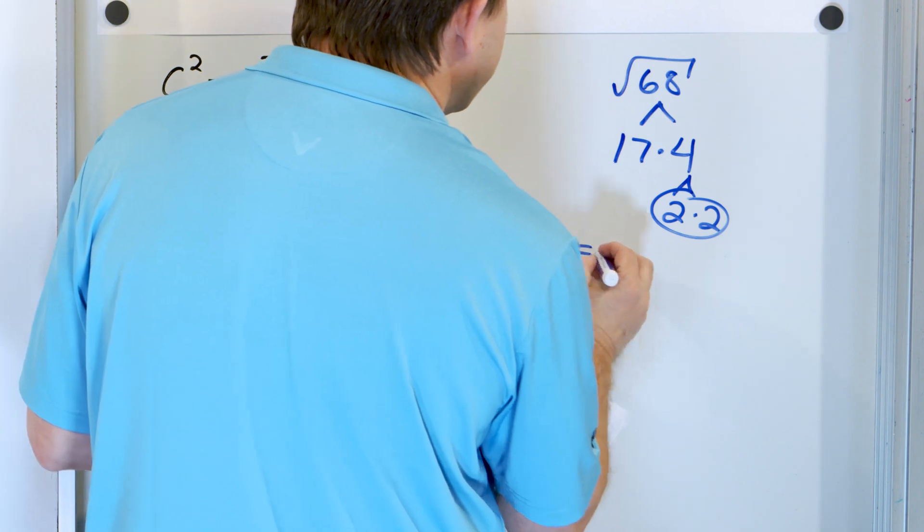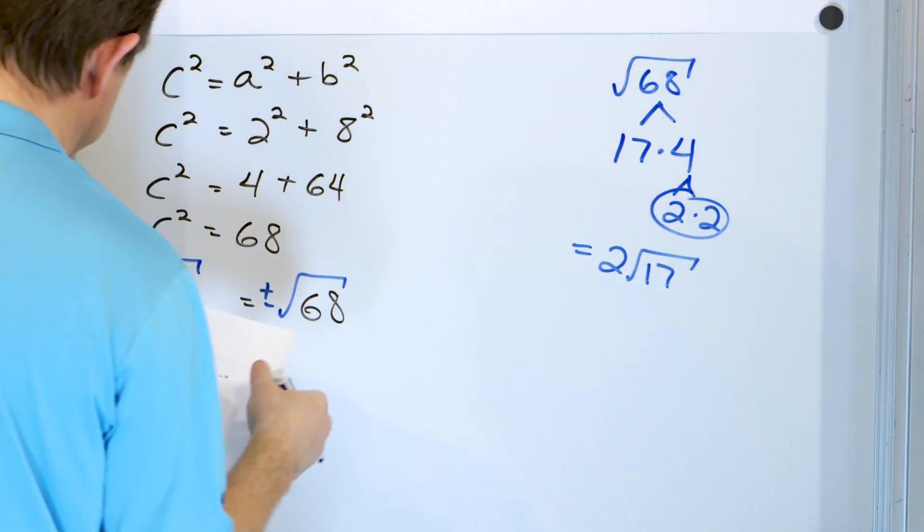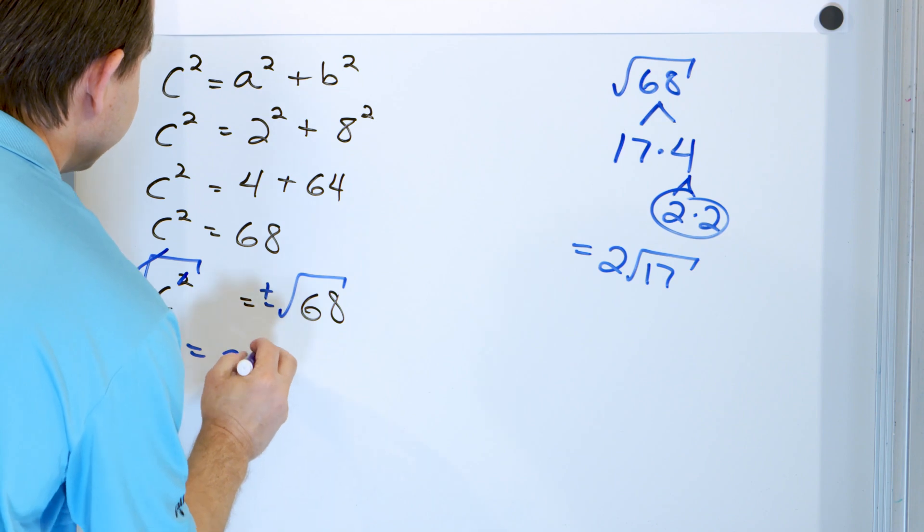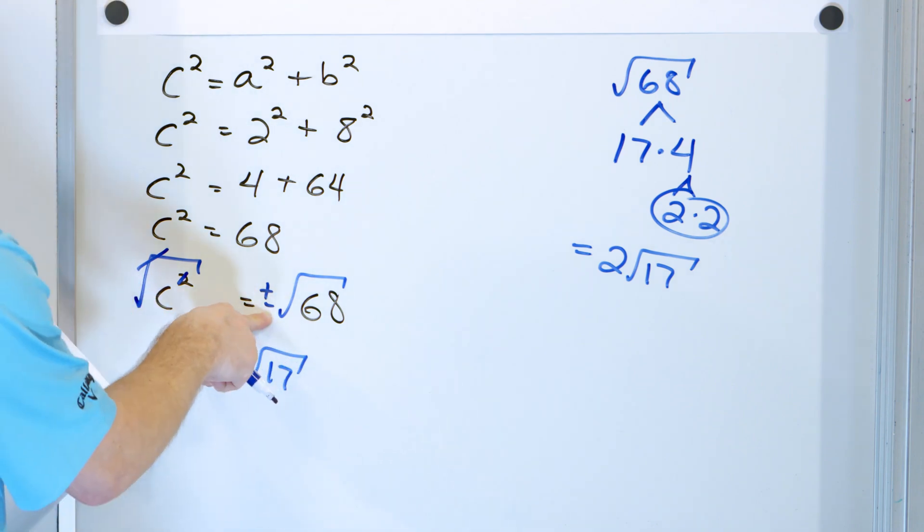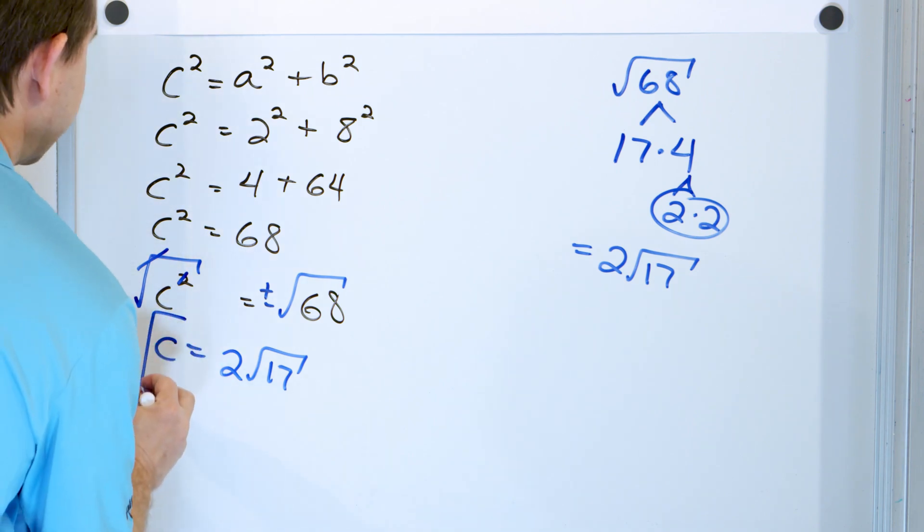So the two comes out, the 17 stays under the radical. So 2√17, I discard the negative length because I can't have negative lengths of a triangle. And this is the final answer.